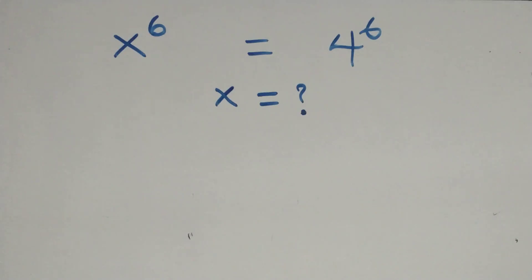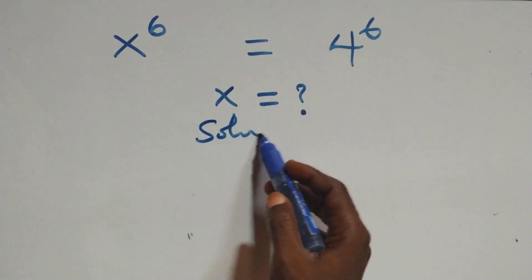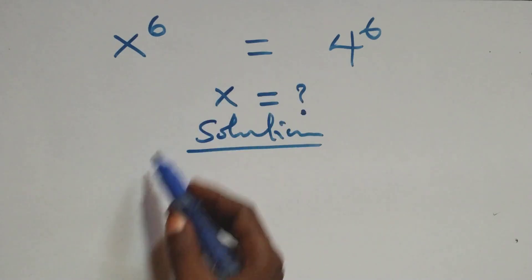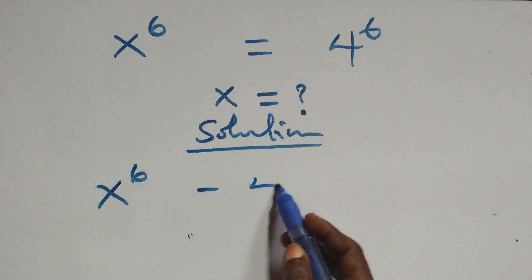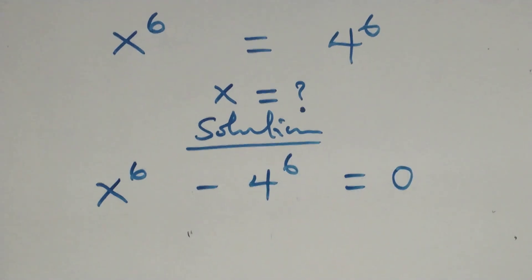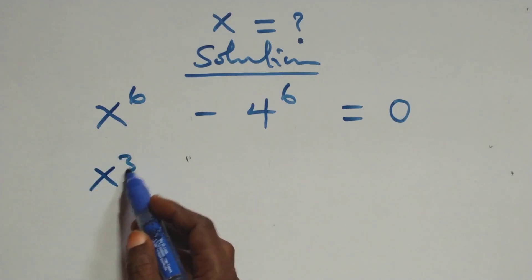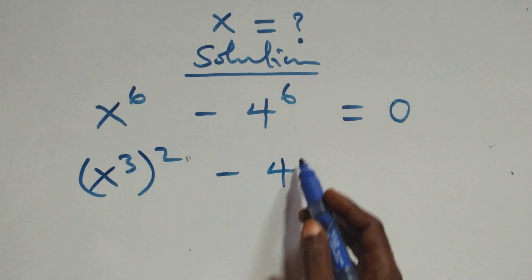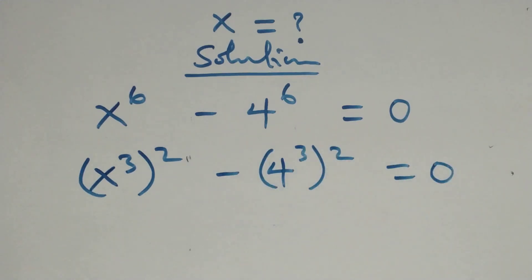Hello, you are welcome. Here we solve this exponential equation. We take 4 raised to power 6 to the left-hand side, giving us x raised to power 6 minus 4 raised to power 6 equals 0. We can rewrite this as x raised to power 3 squared minus 4 raised to power 3 squared equals 0.